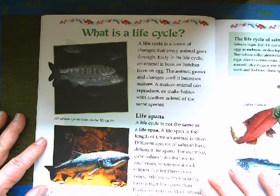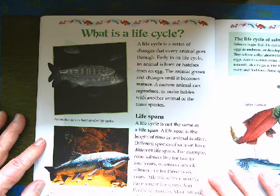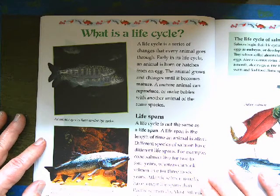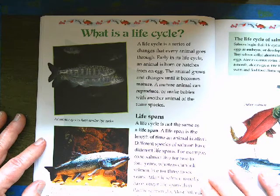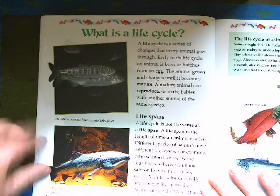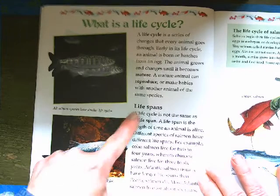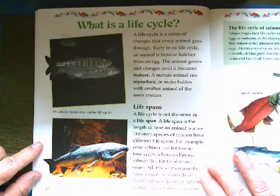What is a life cycle? A life cycle is a series of changes that every animal goes through. Early in its life cycle, an animal is born or hatches from an egg. The animal grows and changes until it becomes mature. A mature animal can reproduce, or make babies, with another animal of the same species. All salmon have a similar life cycle.